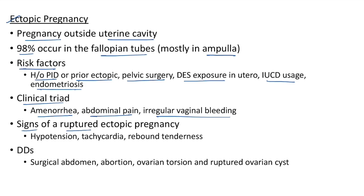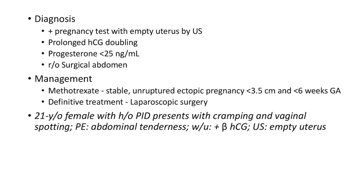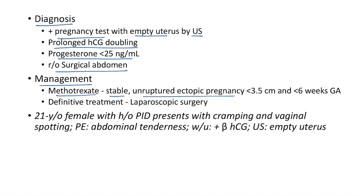Signs of ruptured ectopic pregnancy: hypotension, tachycardia, and rebound tenderness. Differential diagnosis includes surgical abdomen, abortion, ovarian torsion, and ruptured ovarian cyst. Diagnosis of ectopic pregnancy: positive pregnancy test with empty uterus on ultrasound, prolonged HCG doubling time, progesterone <25 ng/mL. Rule out surgical abdomen before diagnosing ectopic pregnancy. Management: methotrexate can be given when the patient is stable with an unruptured ectopic <3.5 cm and <6 weeks gestational age. Definitive treatment is laparoscopic surgery.